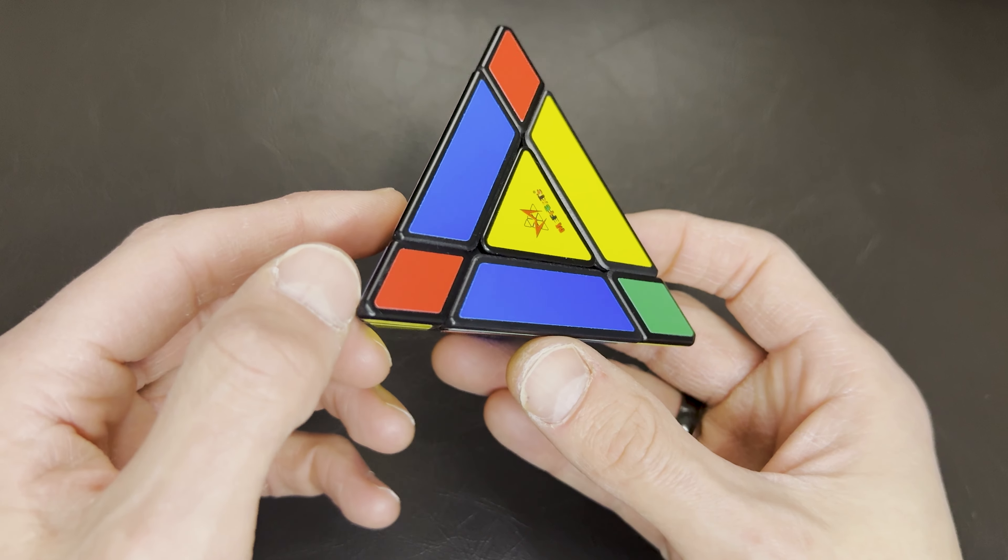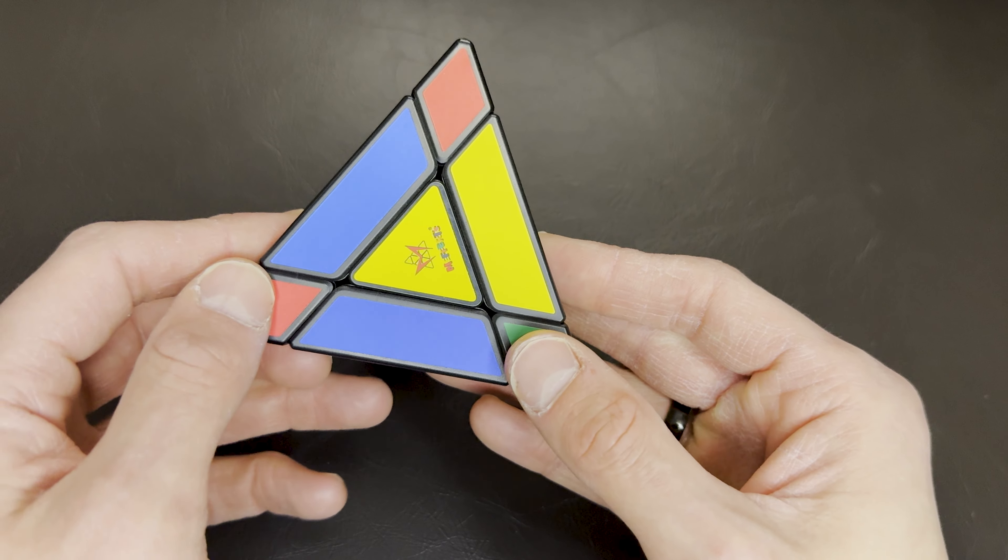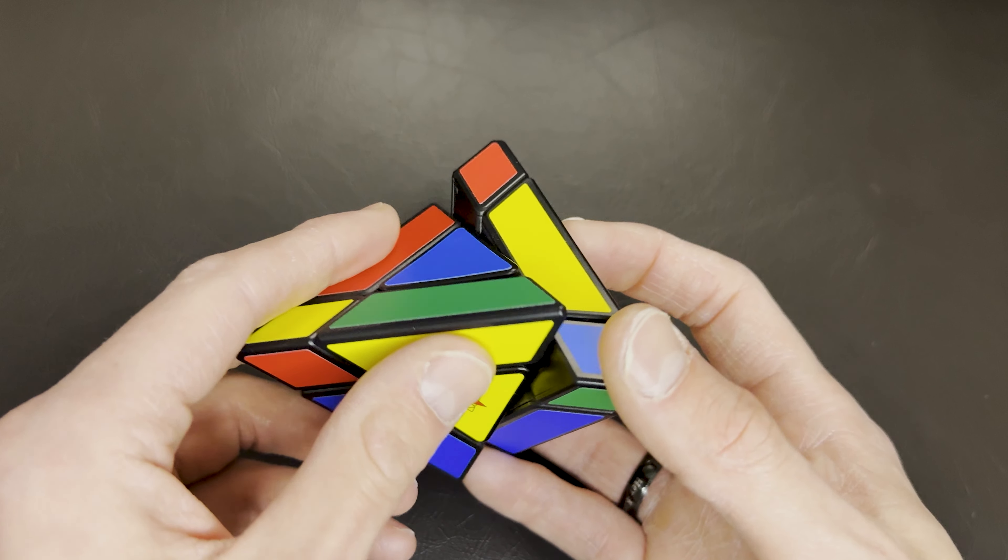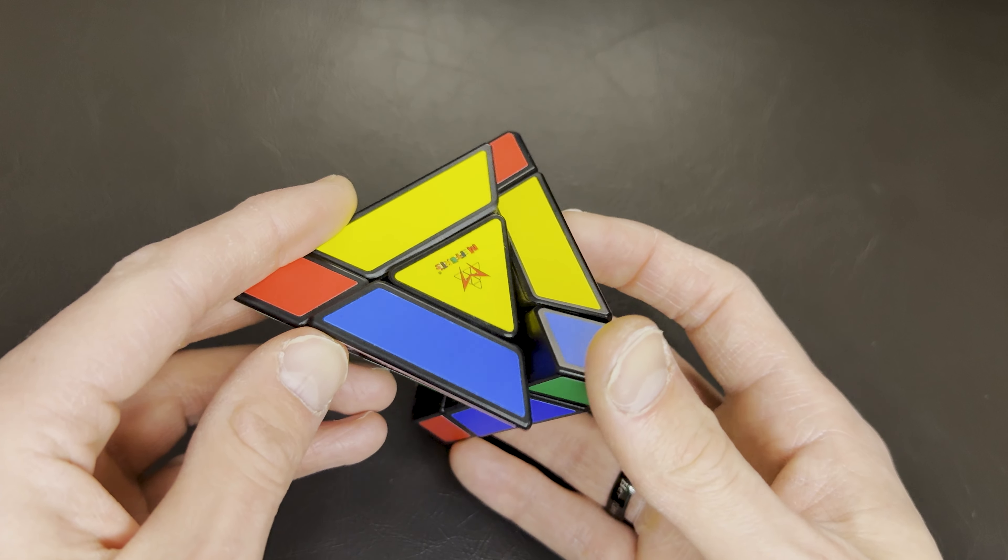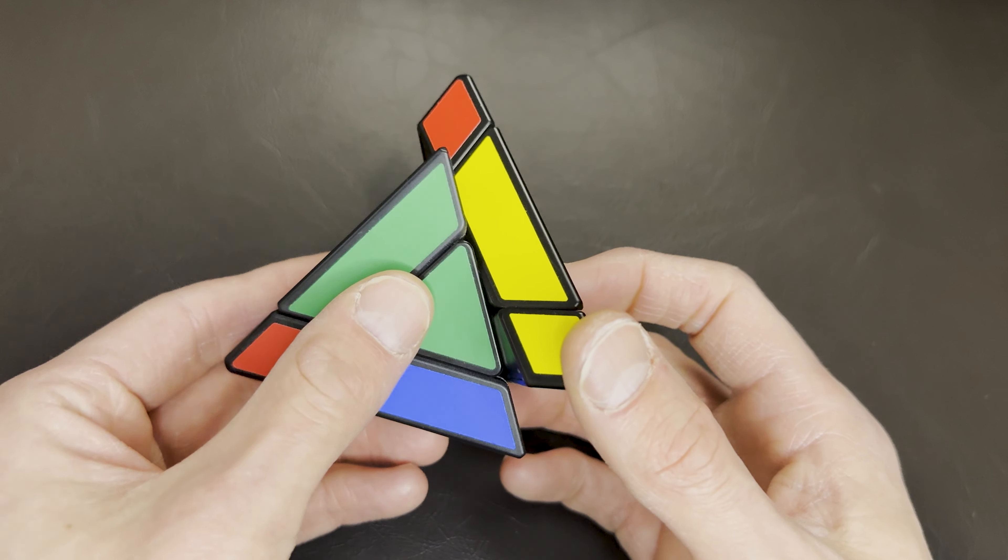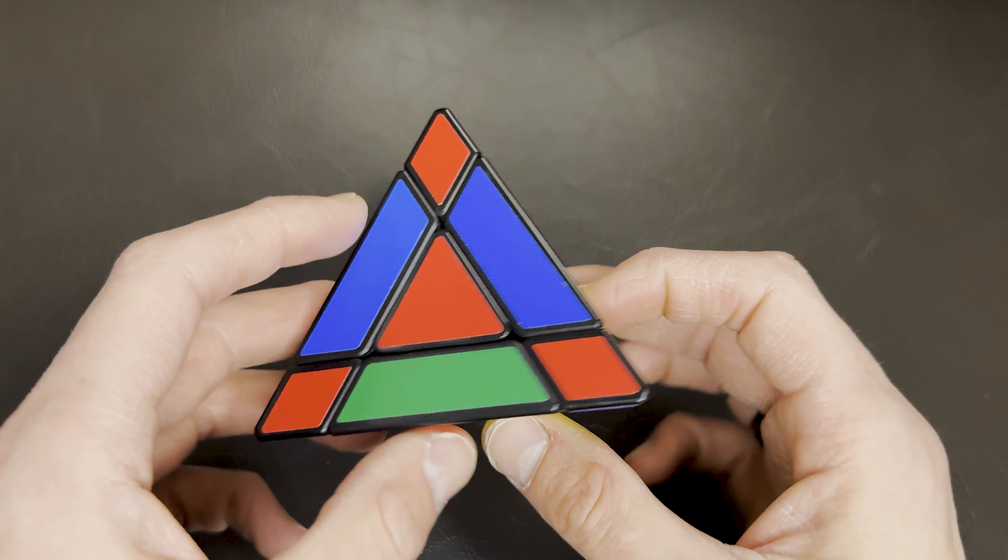To start we want to line up one side with all the same color diamonds. Let's start with the red side. First step would be to twist this one over. So that was pretty straightforward.